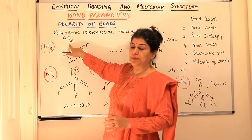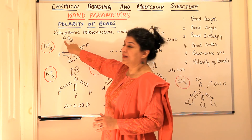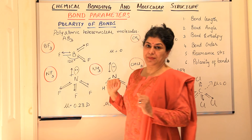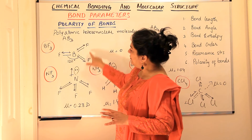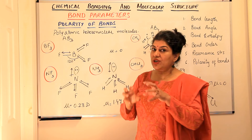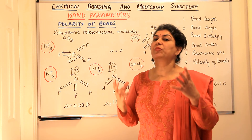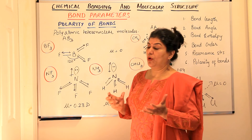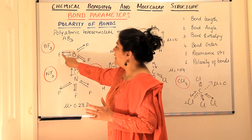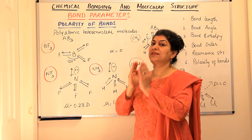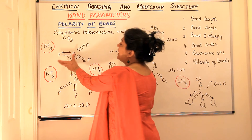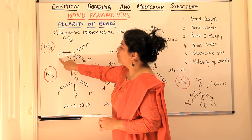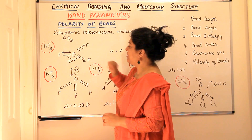AB3 means there is one atom of one element and three atoms of another element. An example here is BF3. Let us look at BF3 and notice what its structure is like and what its net dipole moment should be. We know that fluorine is more electronegative than boron. Therefore, the dipole moment for the bonds — the bond dipoles — should direct towards fluorine, and we notice that the dipole moment is towards fluorine for all three bonds.